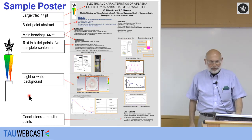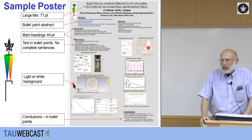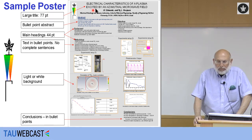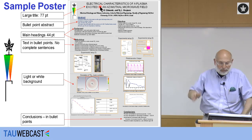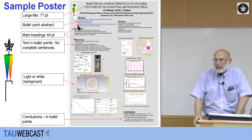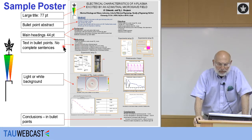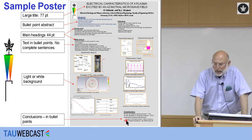Here's a sample poster to illustrate a few points. You want a light color or white background — I think white is actually better. Use a large title, something on the order of 77 points. Do this up in PowerPoint or some other program designed for the purpose. You should have an abstract, but in bullet points only — key words, no complete sentences. Main headings are big, about 44 points; all of the text is also just bullet points; present your conclusions also in bullet points.